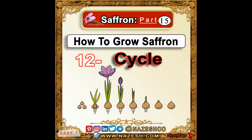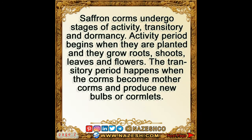Saffron part 15: how to grow saffron. The saffron corm life cycle undergoes three stages — activity, transitory, and dormancy. The activity period begins when corms are planted and they grow roots, shoots, leaves, and flowers.